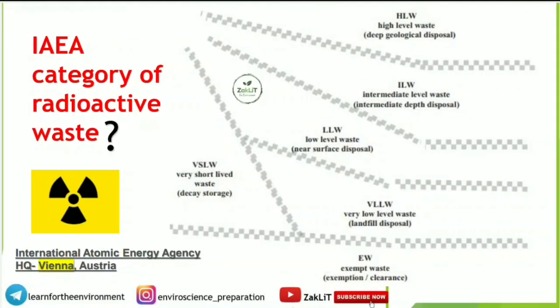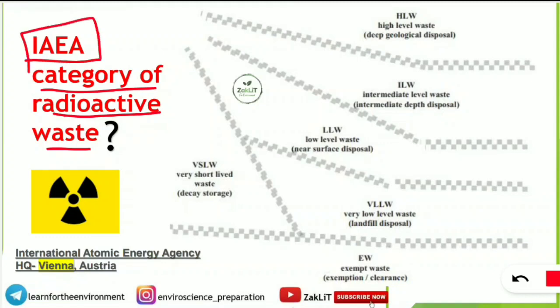This question was asked in a previous ARS NET Environmental Science paper: IAEA category of radioactive waste is divided into how many categories? First of all, IAEA stands for International Atomic Energy Agency and its headquarters is in Vienna, Austria. According to the IAEA, radioactive waste is categorized into six categories.